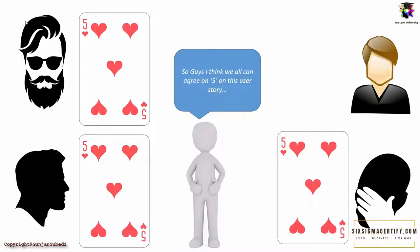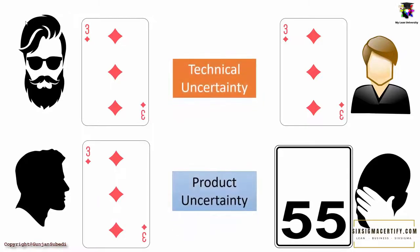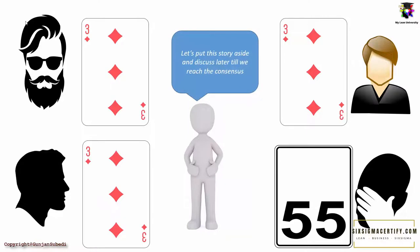But let's suppose a special case here. One person came up with a different figure, say suppose 55. So what to do in that case? There could be two things responsible for it: technical uncertainty and product uncertainty. Technical uncertainty when the team is not sure which approach of development would be easier or better, and product uncertainty when the team is not sure how the end user would react. So in this case it is wise to put the story aside and discuss until the uncertainty is resolved or we use the range as estimate.